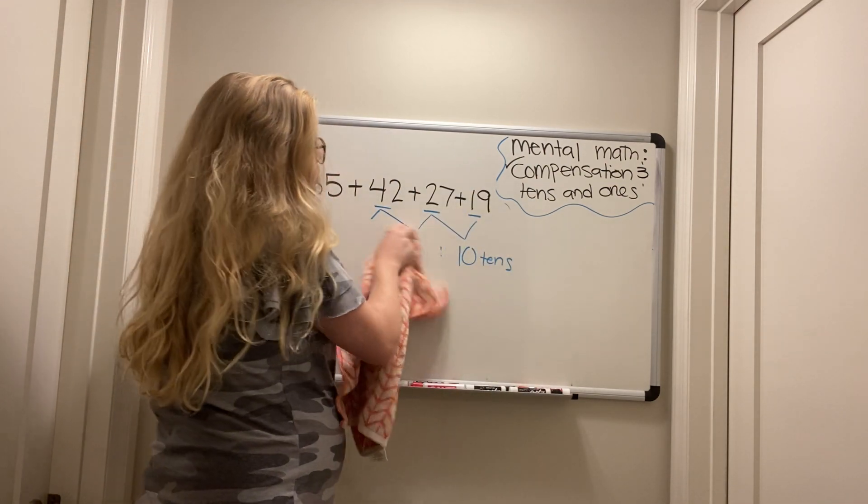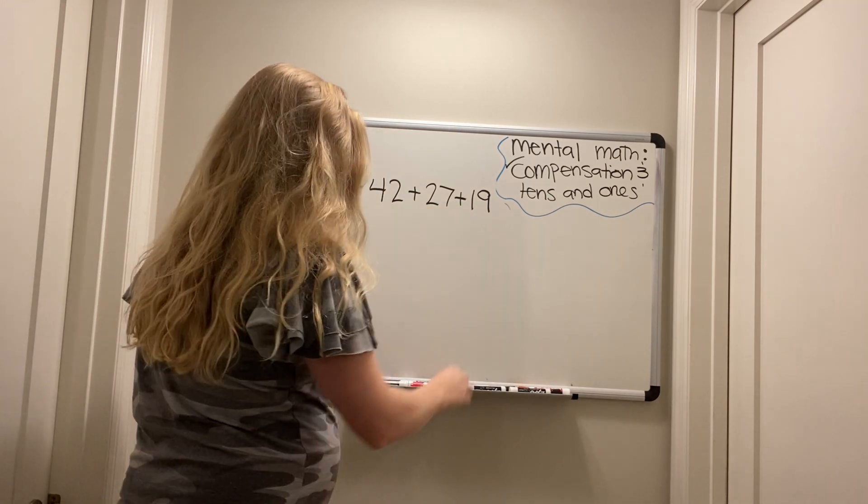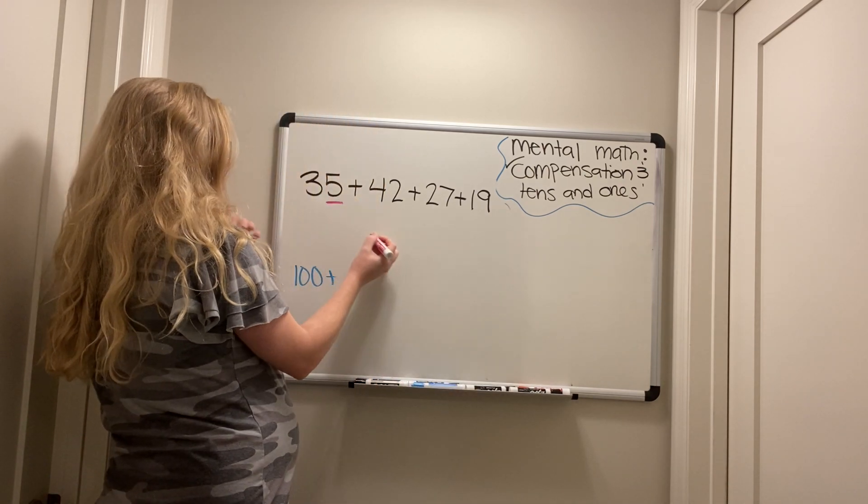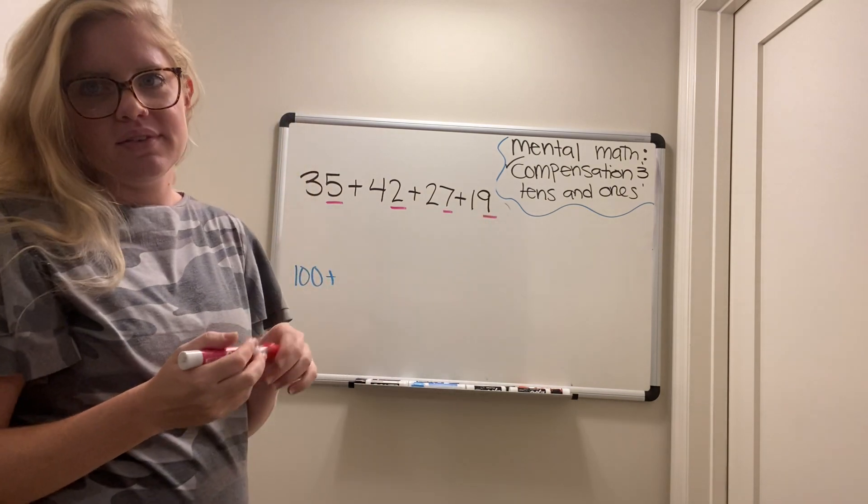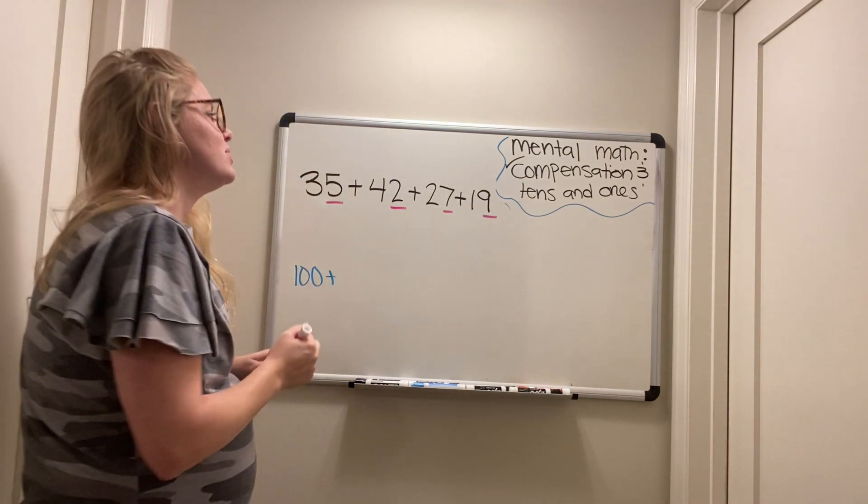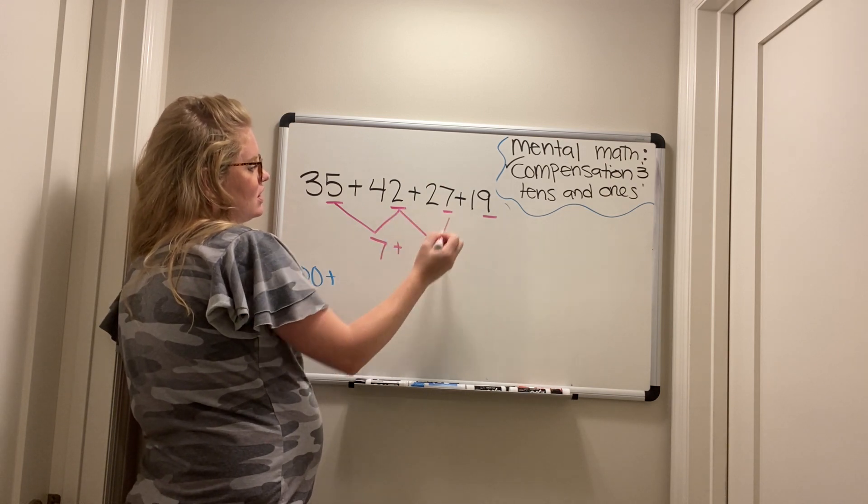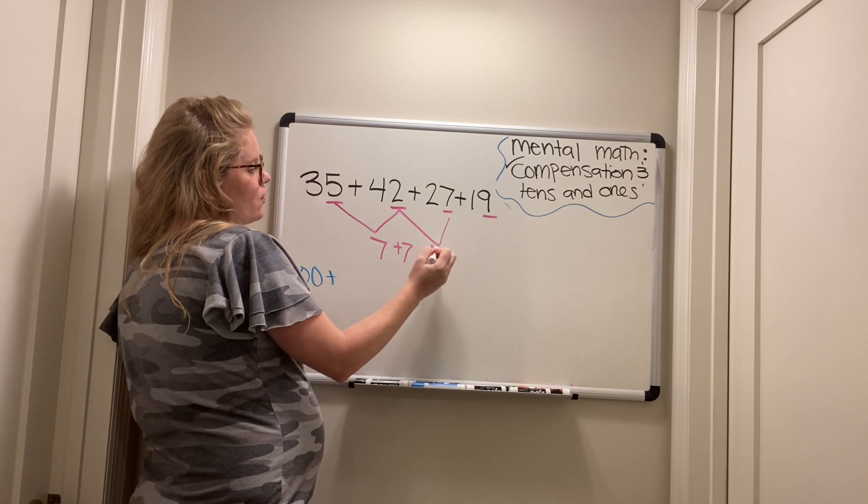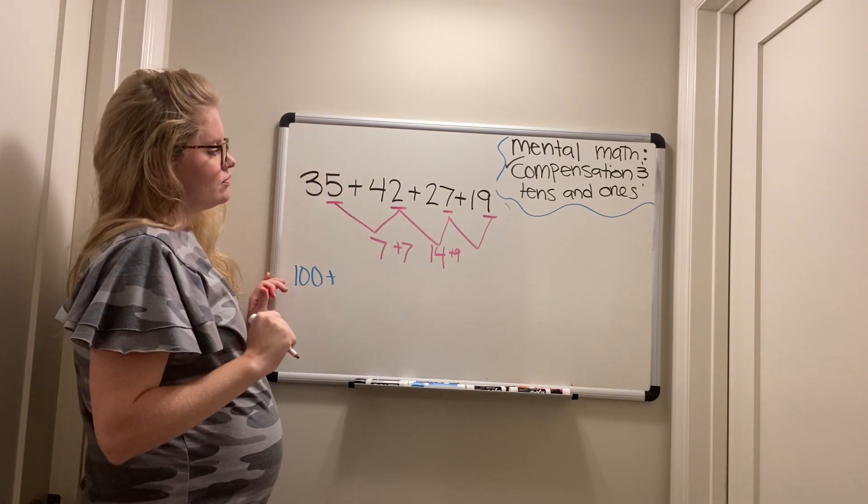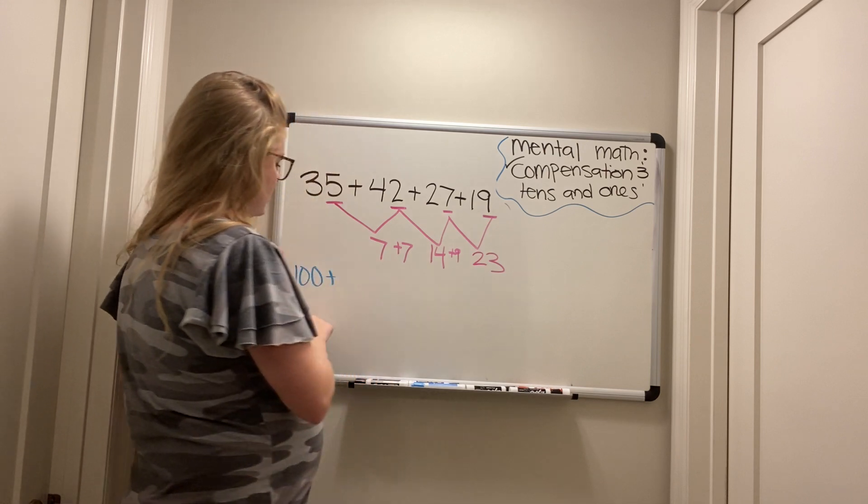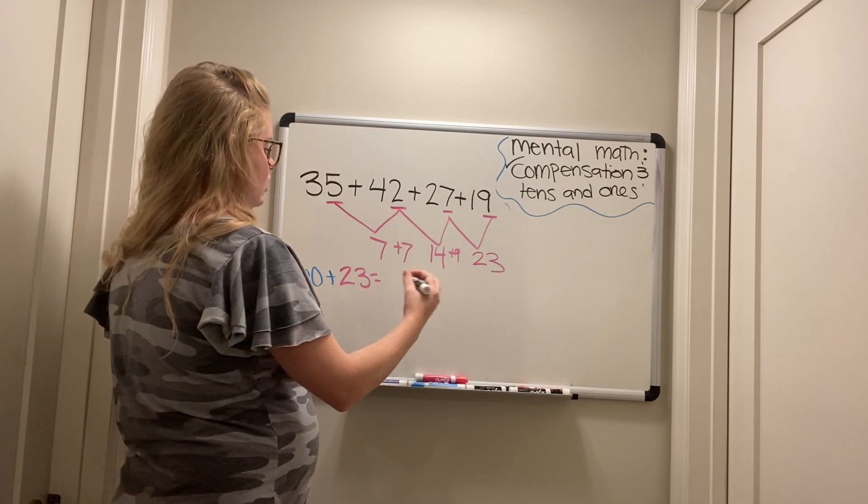But we do need to worry about these ones, don't we, friends? We do need to worry about these ones. All right. Let's look at our ones. We have a five, a two, a seven, and a nine. Oh my. We can do this. We got this. All right. Five plus two is seven. Seven plus seven is 14. 14 plus nine is 23. So we have 100 plus 23, which is going to give us our answer of 123.